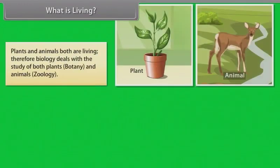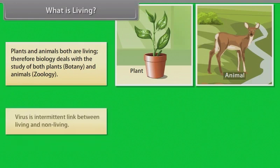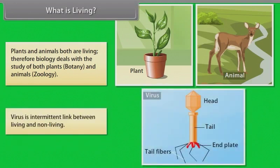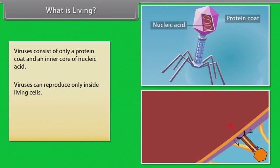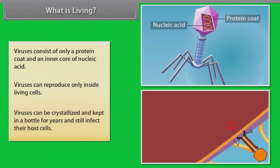Plants and animals both are living. Therefore, biology deals with the study of both plants (Botany) and animals (Zoology). Virus is an intermittent link between living and non-living. Viruses consist of only a protein coat and an inner core of nucleic acid. Viruses can reproduce only inside living cells, but can be crystallized and kept in a bottle for years and still infect their host cells.